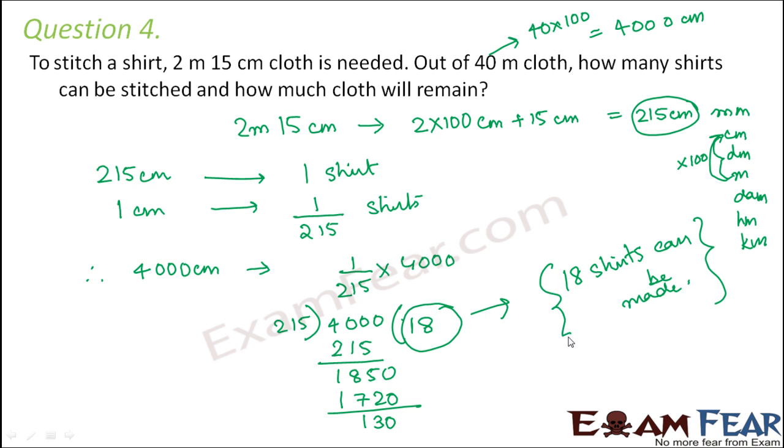Now do you think that some amount of cloth will remain? Yes, it will remain. And that is why you have this remainder. Now had it been completely divisible, in that case there would have been no remainder. So no remainder means no cloth will remain. So that entire amount of cloth will be needed for that particular number of shirts. But in this case, you have this remainder which says that this much amount of cloth will also remain.